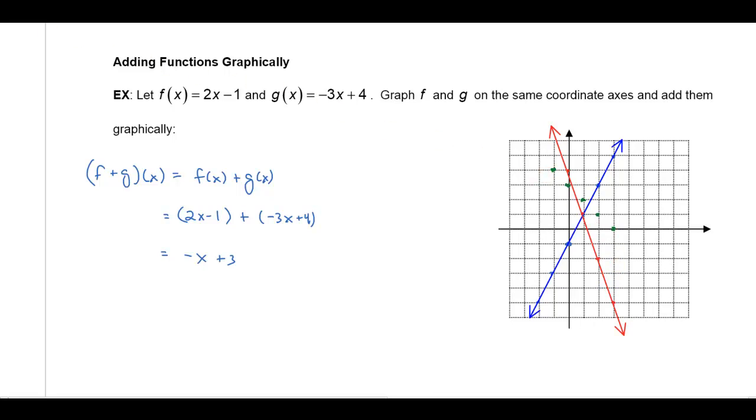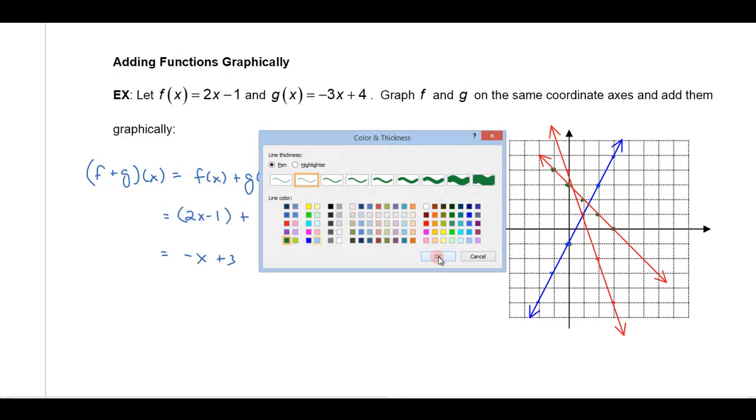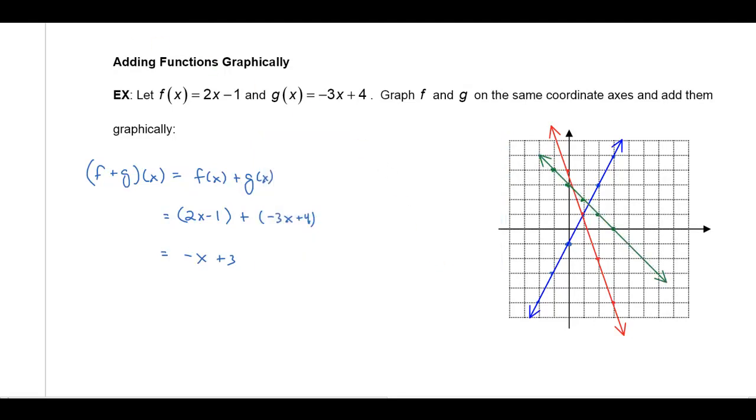Alright, so if I go ahead and connect the dots there that will give me the graph of the sum of those two functions. Let's make it green. There we go. And what you'll notice is that the equation of this graph, notice you can read it right off the graph, the y intercept is 3 and your slope is negative 1.